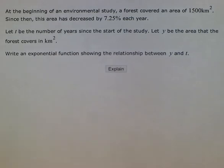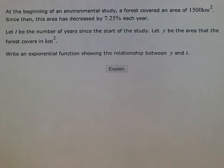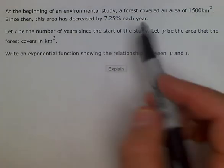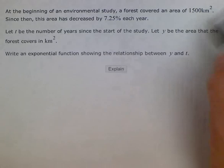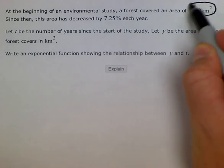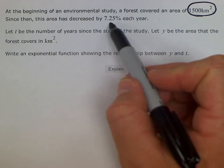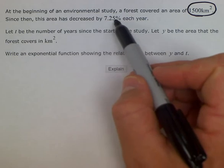So what we're going to need to do here is use a form of compound interest because we see that we have a starting amount of 1,500 kilometers squared. But each year it decreases by 7.25%. That's not from the initial 1,500.